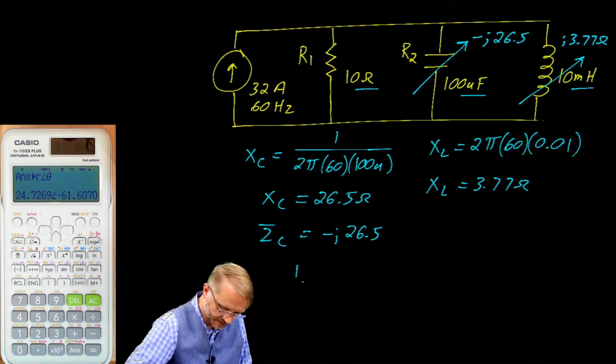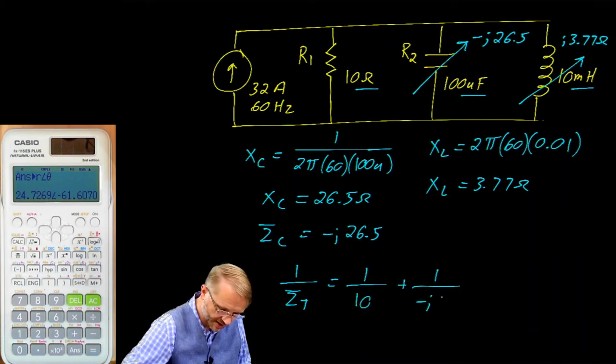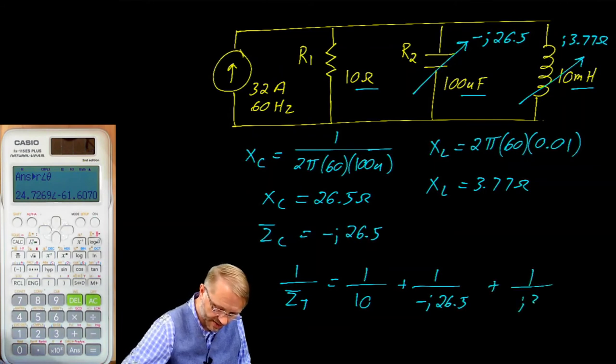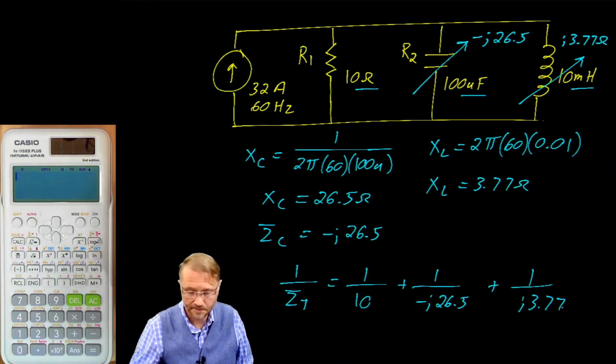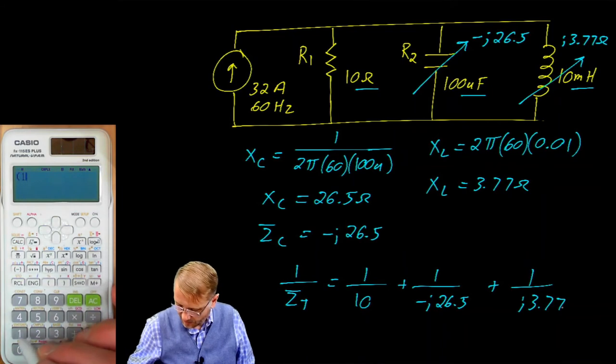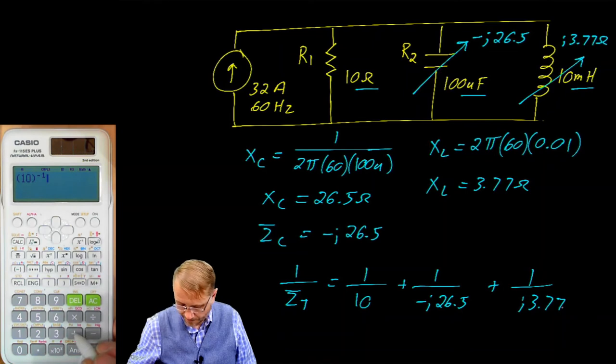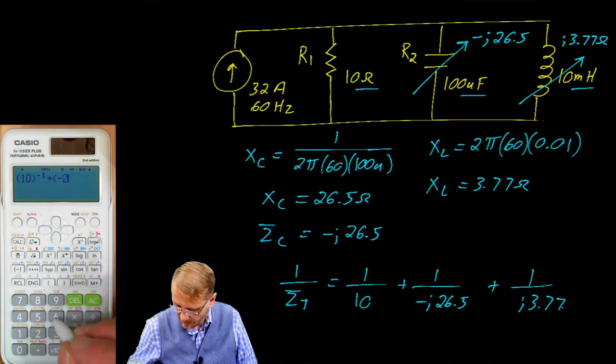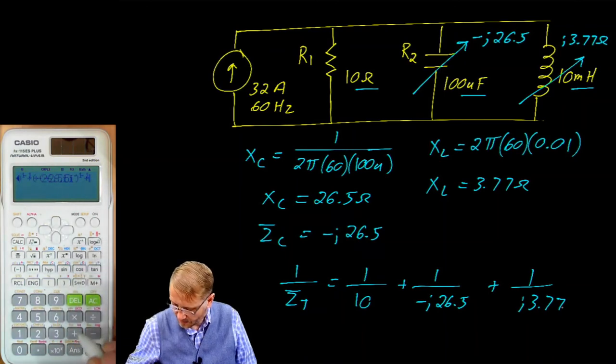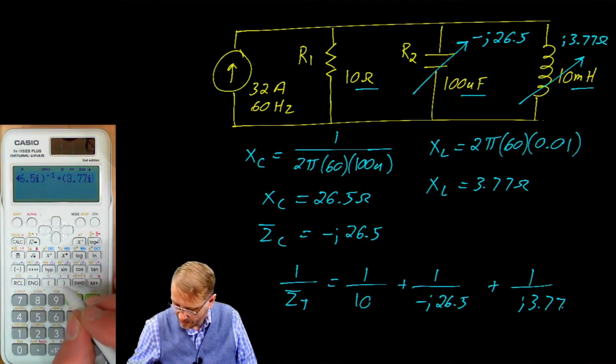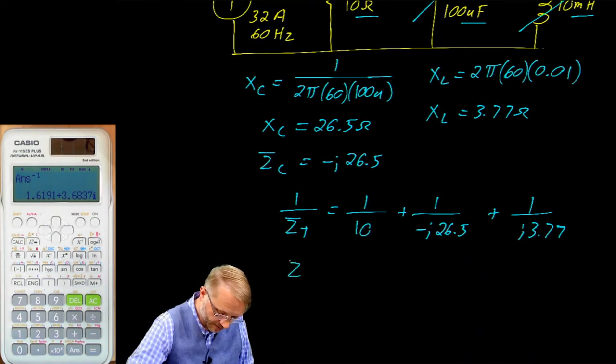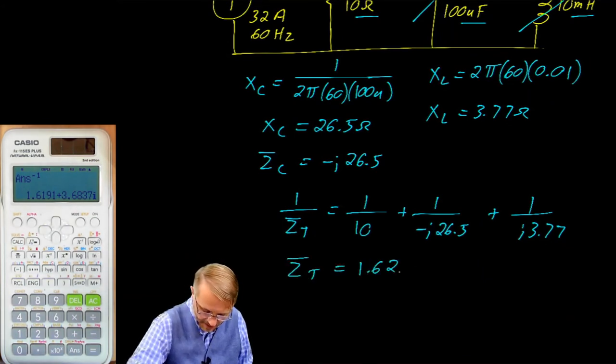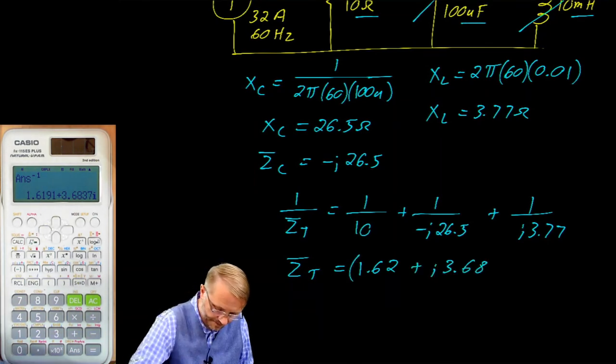The total impedance is calculated as 1 over Z total is equal to 1 over 10 plus 1 over negative J 26.5 plus 1 over J 3.77. Now that looks scary. But again, your calculator will take care of it for you. So let's give it a try. I recommend you put parentheses around every number at first. So here's 10, then we're going to invert it, plus parenthesis, negative 26.5 J, invert, plus parenthesis, 3.77 J, parenthesis, invert, equals, invert, equals. So there we go. The total impedance 1.62 plus J 3.68 ohms.